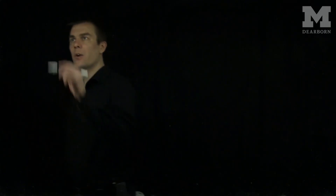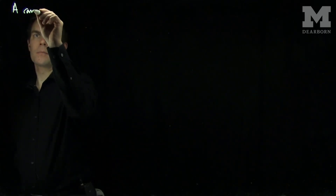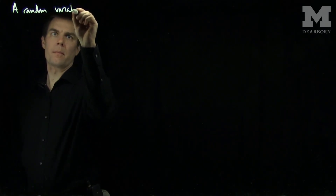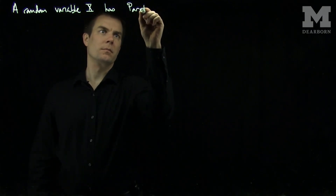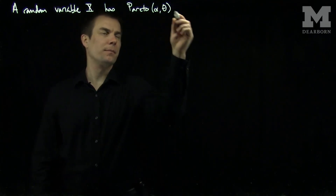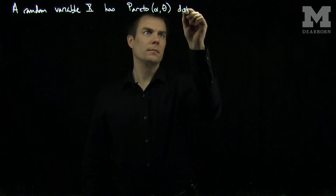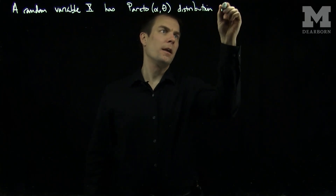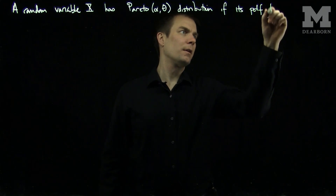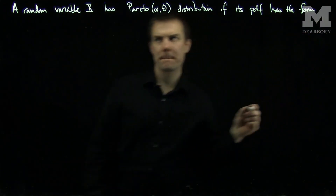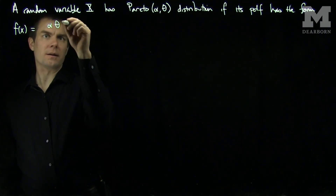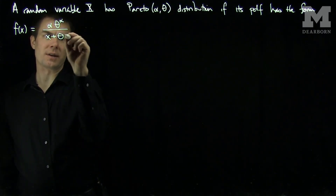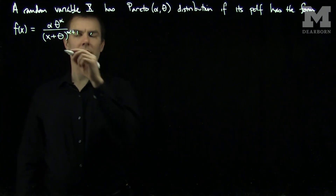Hello, students. In this video, we'll discuss properties of the Pareto distribution. A random variable X has a Pareto distribution with parameters alpha and theta if its PDF has the form f of x equals alpha theta to the alpha over x plus theta to the alpha plus 1, for values of x which are positive.